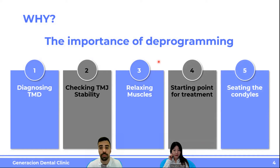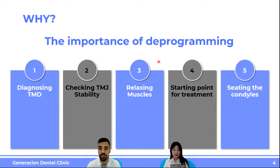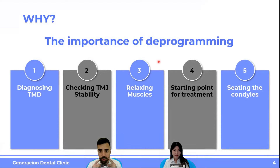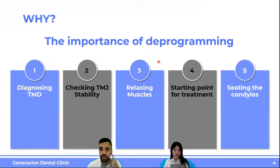The most important part is to understand that these little devices help us diagnose if we have any problems in the joints. If there is any problem here, this device is going to help us know whether there is a problem or the joints are fine. The second part is to check if there is stability in the joint, because some joints are not healthy — they're destroying themselves or just not in the right position. It also relaxes the muscles and helps us find a starting point for complex cases.